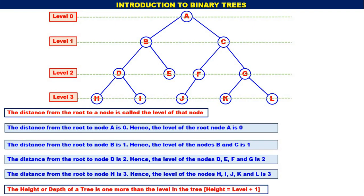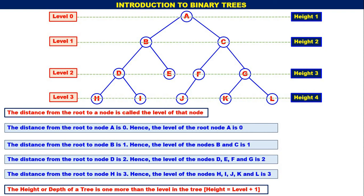The height or depth of a tree is 1 more than the level in the tree. So height is equal to level plus 1. The height of root node A is 1, B and C are at height 2, the next level is height 3, and the deepest level is height 4. Height is equal to level plus 1 — you should be very clear with the concept of level and height.